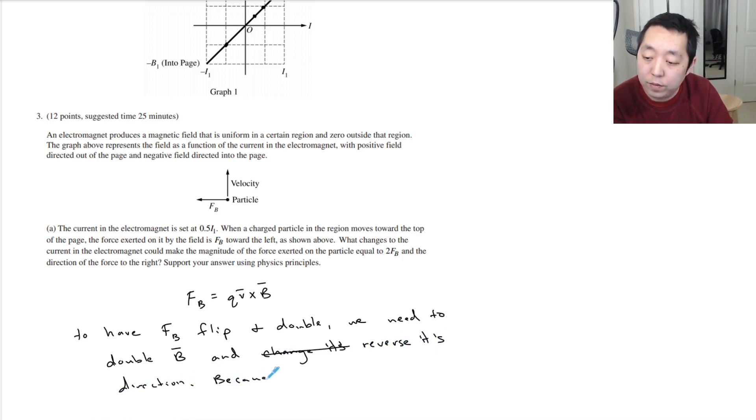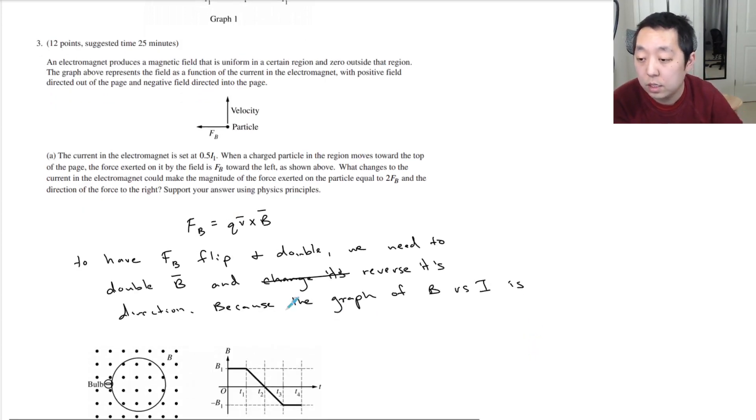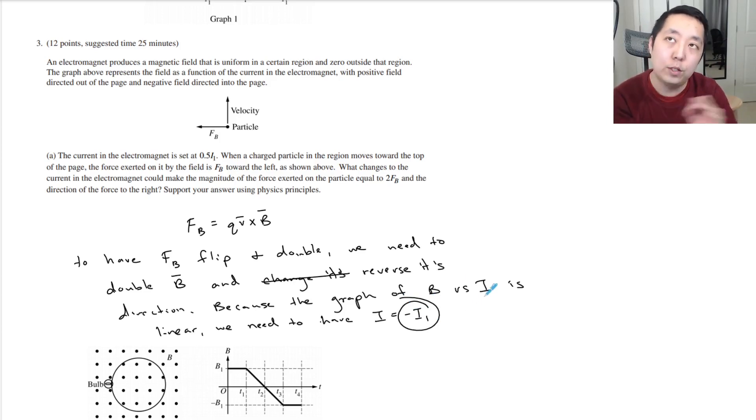Double the strength, double B and reverse its direction. Because the graph of B versus current is linear, we need to have I equals negative I1. Change the current, flip the direction and double it from what it was before. Since we were at 0.5 I1, you've got to double it to make it I1.